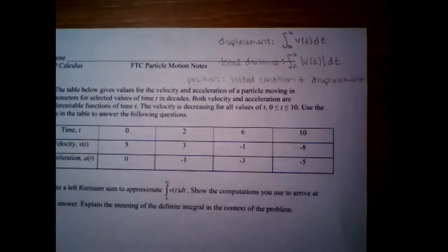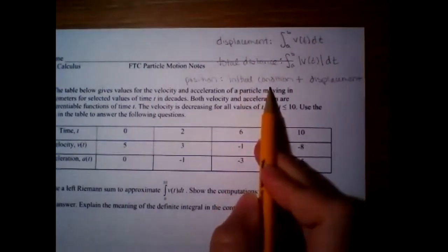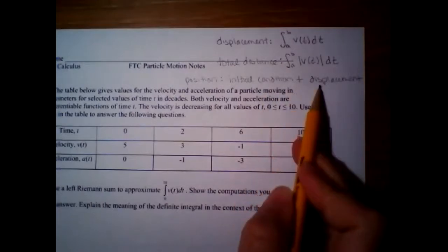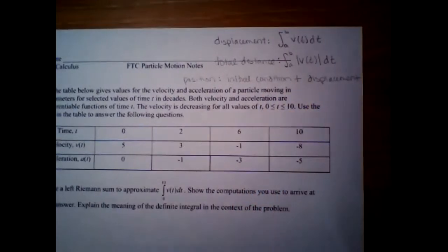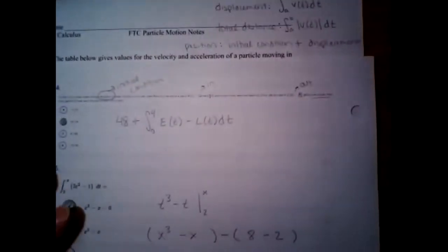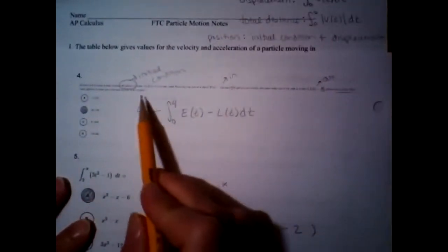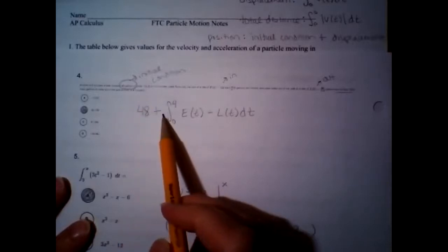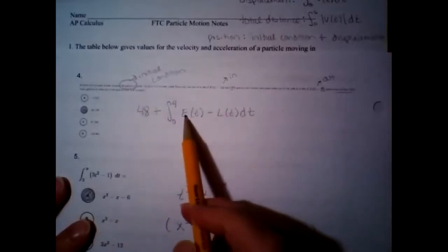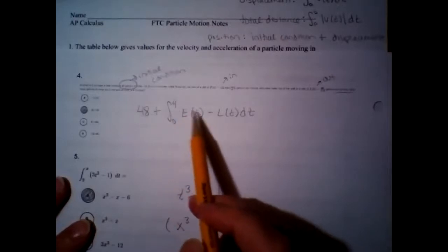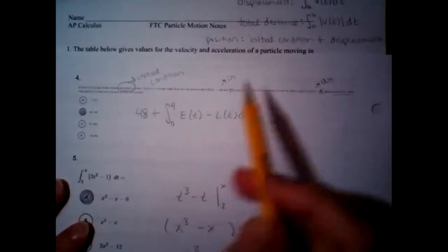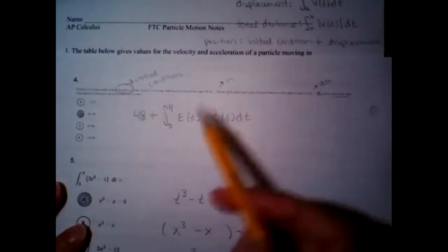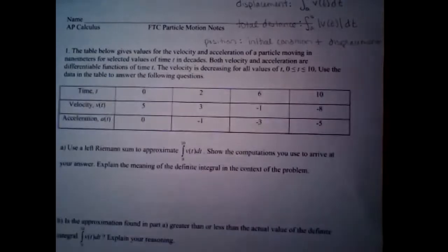If you want to find out where you are, you take where you started plus whatever your displacement was. I'm just putting vocabulary to this — it's not any different than what we already did. Like the water homework problem: we started with 48 gallons as the initial condition, then added the displacement — rate of water coming in minus rate going out. Don't let the words overwhelm you.